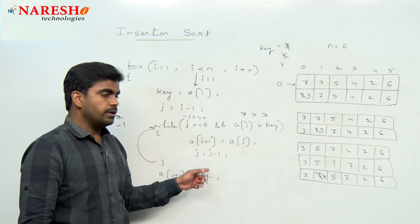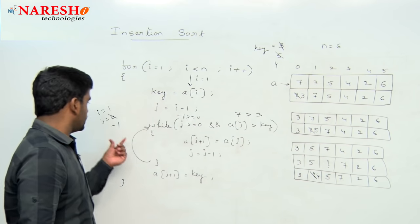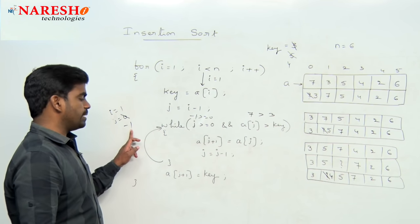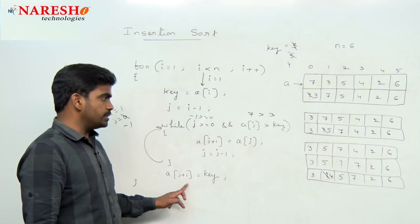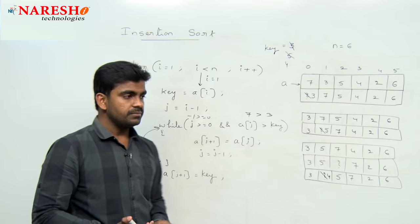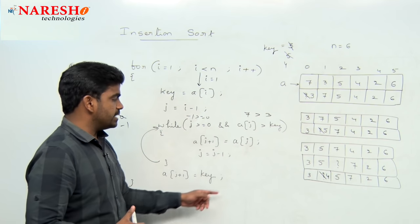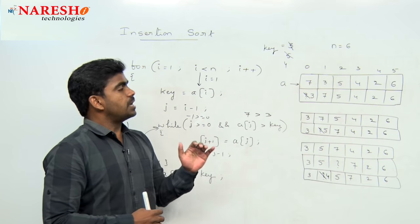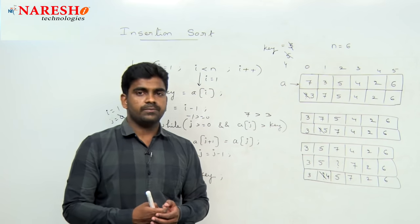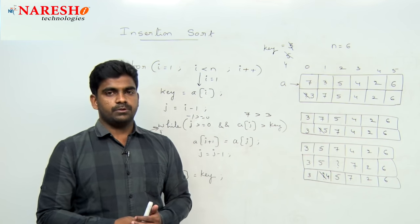We should stop. Now the value 3 should be placed — j value is minus 1, so we need to place at the 0th location. The key value is stored into a[j+1]: minus 1 plus 1 is 0, so a[0] gets the key value 3. This is one iteration. In the same way, all remaining elements will be executed with the same code. This is how insertion sort executes, algorithm-wise and logically. Hope you understood. For more videos, please subscribe to the Naresha Technologies channel. Thank you.